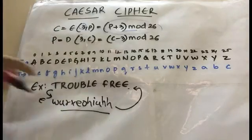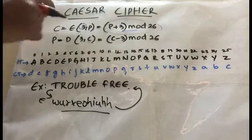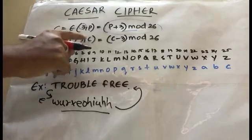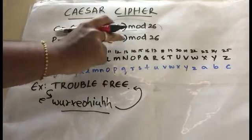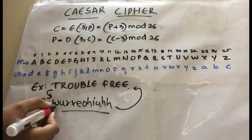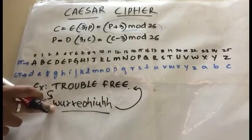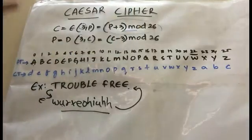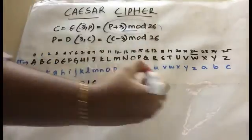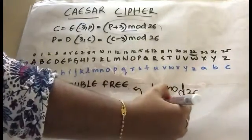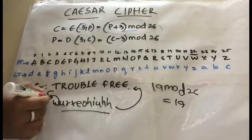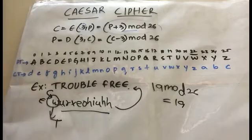For decryption, given the ciphertext you convert it back to plaintext using: P = D(3, C) = (C - 3) mod 26, where C is the ciphertext value. For example, W has numerical value 22: 22 minus 3 is 19, and 19 mod 26 is 19. The alphabet at position 19 is T — which is our first letter of the original plaintext.